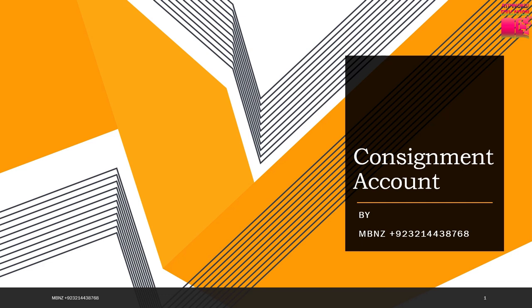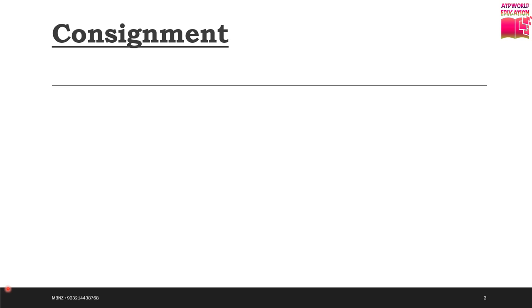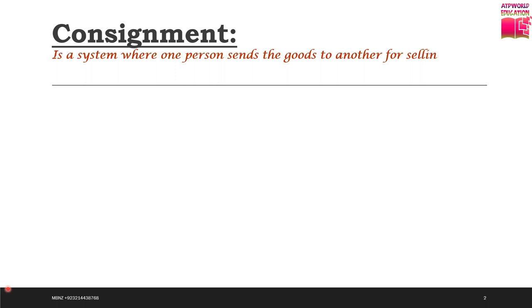Let's start the topic and see what is a consignment account. Consignment is basically an agreement between two parties. One of these parties is the owner of goods and the second party is the seller of goods. Two persons form an agreement or create a mutual understanding - for example, person A has goods and agrees with person B that person B will sell the goods of person A.